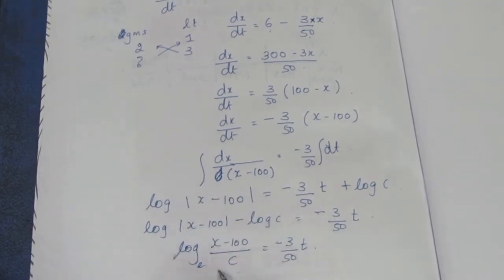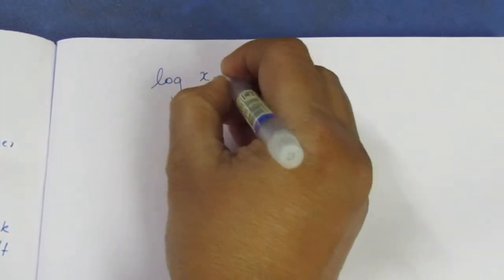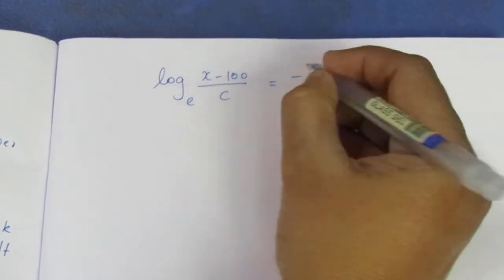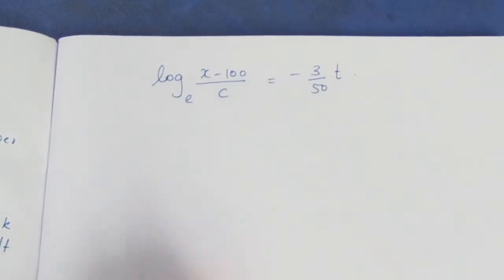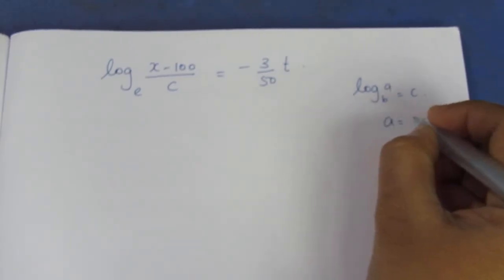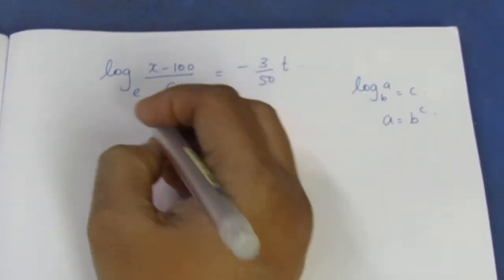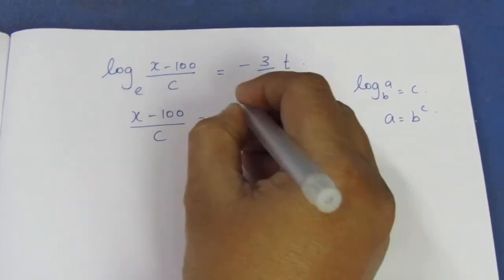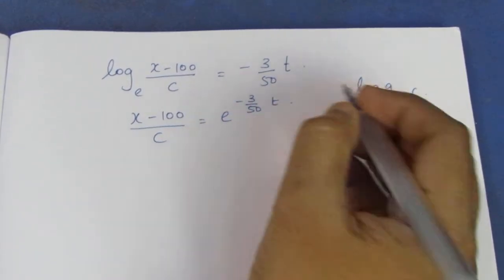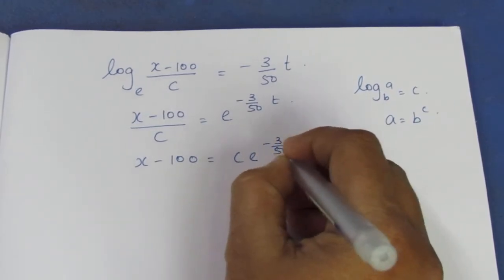The logarithmic formula is converted to exponential form. Using log base b of a = c means a = b^c, so (x - 100)/C = e^(-3t/50), which gives the general equation x - 100 = Ce^(-3t/50).